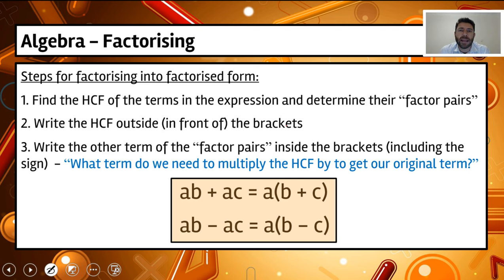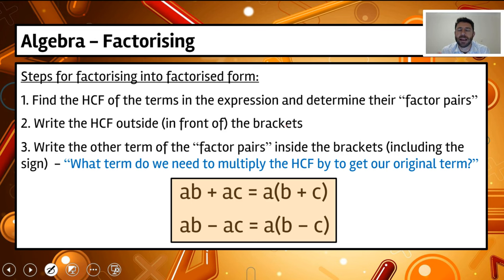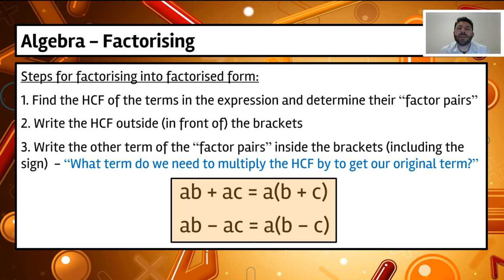These are steps that are really easy to follow, and I'll go through them with examples. You can skip some steps once you're more comfortable and don't need to write down the list of factors. The first step when factorizing is to find the highest common factor of the terms in the expression, then find their factor pairs — the number that multiplies by the highest common factor to give the original term. Then take that highest common factor and bring it outside the bracket. The question to ask is: what term do we need to multiply the highest common factor by to get our original term? Those are the numbers that go inside the brackets.